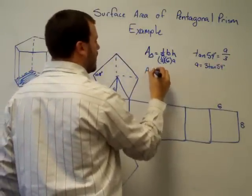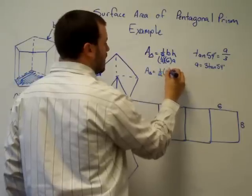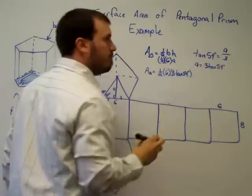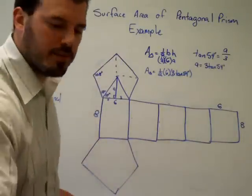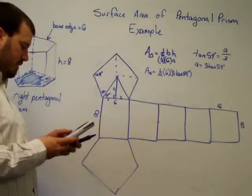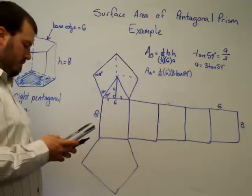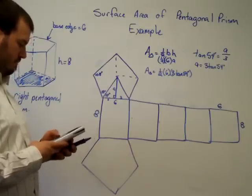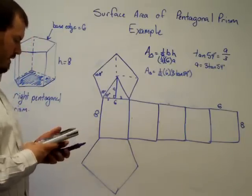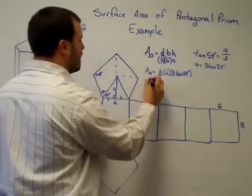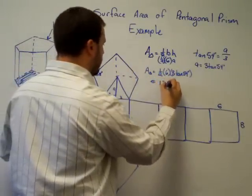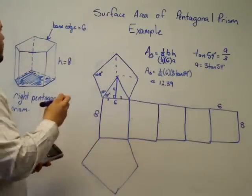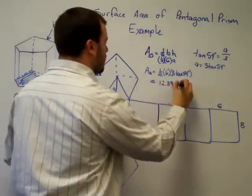So the area of one triangle is equal to one-half times six times three times the tangent of 54 degrees. And I'll go to the calculator and get an approximate for that. Make sure you're in degree mode. And for each triangle in the pentagon, it is approximately 12.39 units squared. I didn't put units on there, so we'll just stick with units squared.